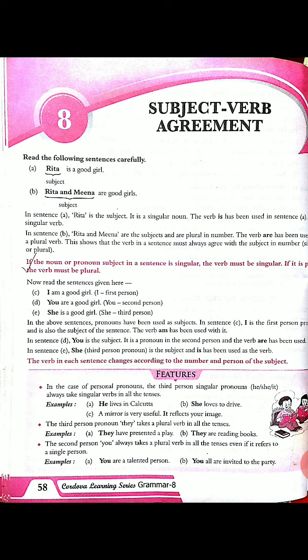Only nouns are plural, not verbs or adjectives. It's a very small thing but we should all remember: if you are adding S to the verb, it won't be plural — in fact, it will be agreeing with the subject. You all know about the three persons: first person is I and we; second person is he and she; and third person is they. Accordingly, we need to use the verbs.